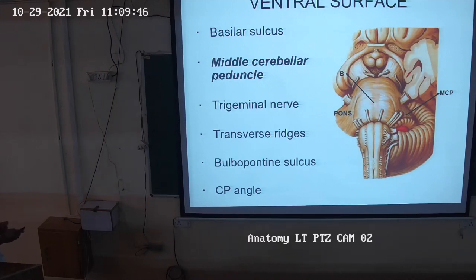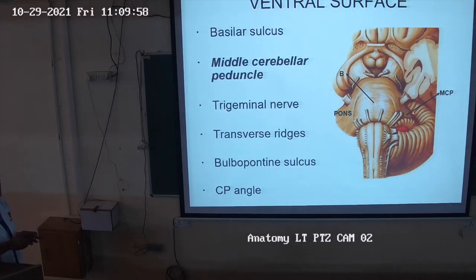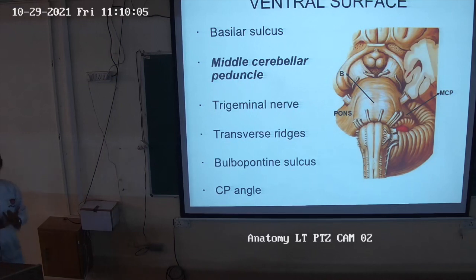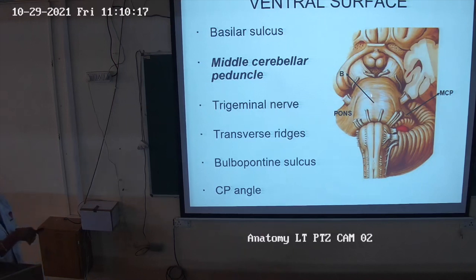You can also see the middle cerebellar peduncles, which are fibers connecting the pons to the cerebellum. The trigeminal nerve — the fifth cranial nerve — emerges from the pons. The sixth, seventh, and eighth cranial nerves emerge from the junction between the pons and the medulla. So the trigeminal nerve is present over the pons.